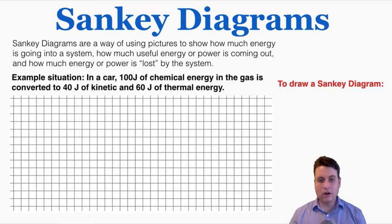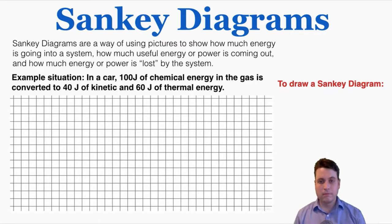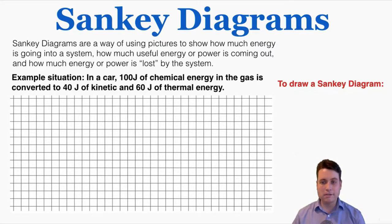Here's an example. In a car, 100 joules of chemical energy in the gas is converted to 40 joules of kinetic energy and 60 joules of thermal energy. The goal of drawing a Sankey diagram is to draw a clear, simple picture to show how much energy is going into a system, how much useful energy is going out, and how much useless energy is being lost by the system.